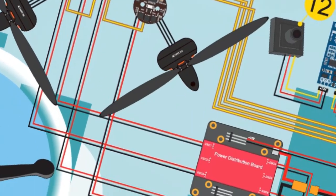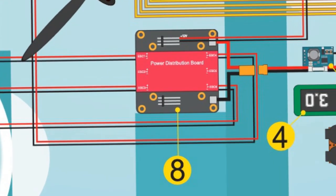The Power Distribution Board distributes the power from the battery to all ESCs. It has positive pads for the red wires and negative pads for the black wires. It can include two voltage circuits.